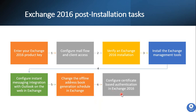Next is configuring certificate-based authentication in Exchange 2016. Certificate-based authentication allows OWA and Exchange ActiveSync clients to be authenticated by a client certificate instead of entering a username and password. Last is the Edge subscription. To establish internet mail through an Edge Transport Server, we need to subscribe the Edge Transport Server to an Active Directory site. This will automatically create two send connectors required for internet email flow. If you don't want to subscribe the Edge Transport Server to an Active Directory site, you can create the send connectors manually to establish mail flow between your Mailbox Server and the Edge Transport Server.